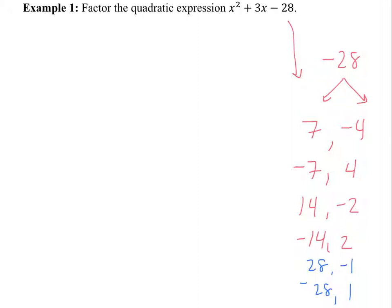That's all of our factors of negative 28. Which of these sets of factors adds up to give you the B value in the middle? The first one that we wrote, it turns out. Would you really list all the factors every time? No, it doesn't make sense. As soon as you get the factors that work, stop there. As soon as I wrote down my first set of factors, I would say: 7 and negative 4 gives me 3, so I'm stopping there. That's definitely my answer.